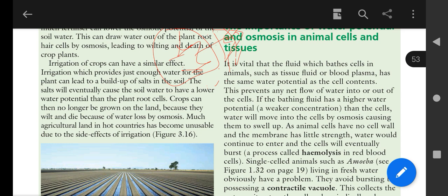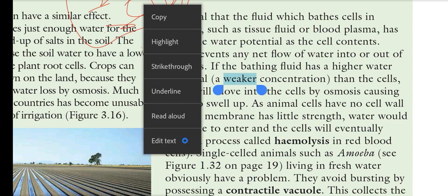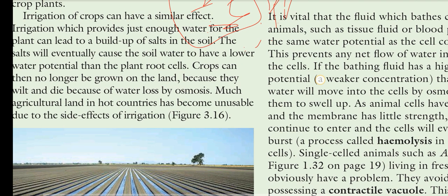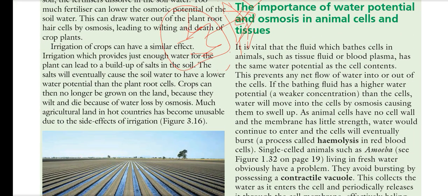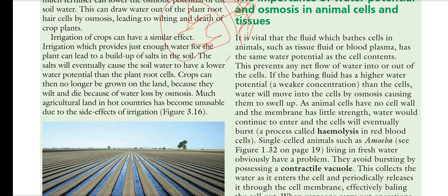This maintains the isotonicity of blood cells, especially red blood cells, and prevents any net flow of water into or out of the cell. If the bathing fluid has a higher water potential (hypotonic solution), water will move into the cell by osmosis, causing cells to swell up. As animal cells have no cell wall and membranes have little strength, water would continue to enter and the cell will ultimately burst — a process called hemolysis of the RBCs.